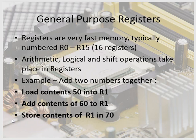General purpose registers are very fast memory, typically numbered r0 to r15, giving 16 registers. Arithmetic, logic, and shift operations take place in these registers. For example, to add two numbers: load the contents of memory location 50 into r1, then add the contents of memory location 60 to r1 — so 60 plus 50 equals 110. Then store the contents of r1 into memory location 70.